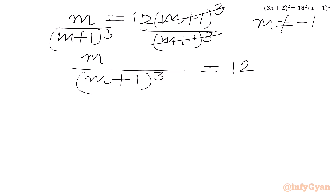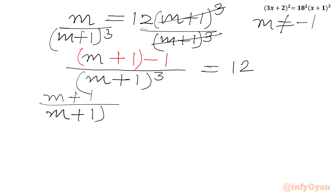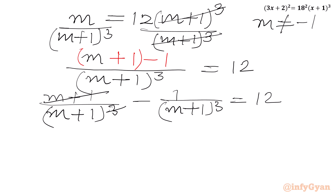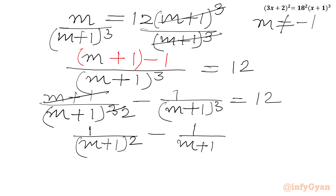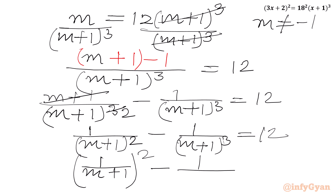Now I will add and subtract 1 in the numerator, then split the fraction: (m + 1)/(m + 1)³ minus 1/(m + 1)³ = 12. Simplifying, the first term gives 1/(m + 1)² and the second stays 1/(m + 1)³, so we have: 1/(m + 1)² minus 1/(m + 1)³ = 12.